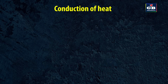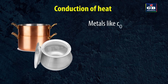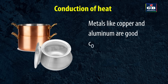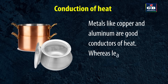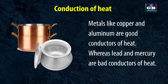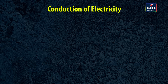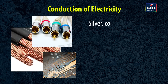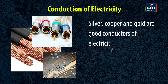Conduction of heat: Metals like copper and silver are good conductors of heat, whereas lead and mercury are bad conductors of heat. Conduction of electricity: Silver, copper and gold are good conductors of electricity.